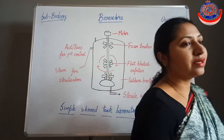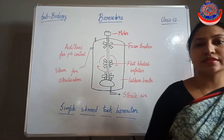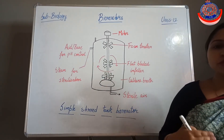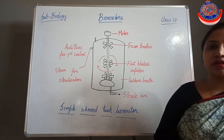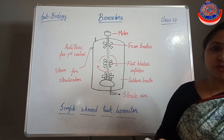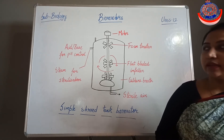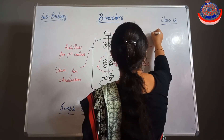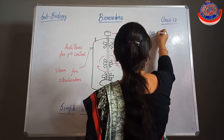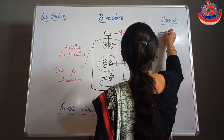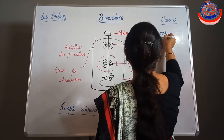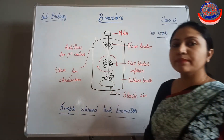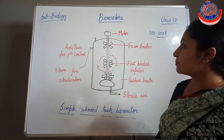Bioreactors are used for the production of the desired product in large quantities - like around 100 to 1000 litre quantity - and for that purpose, bioreactors are used.